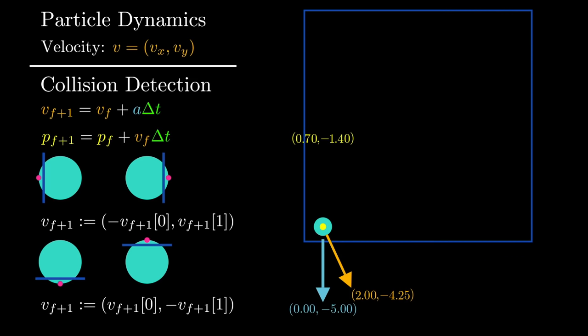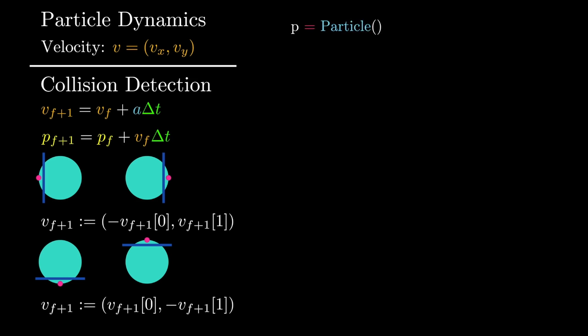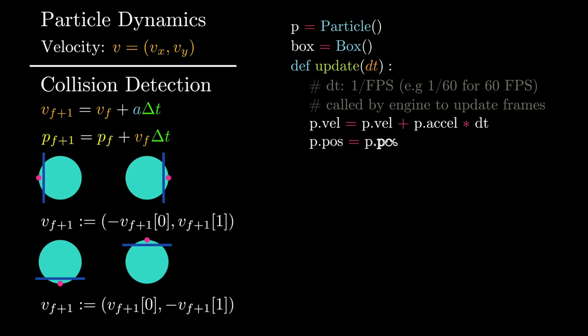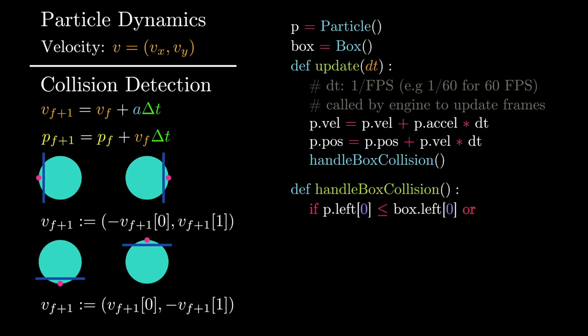Here are a few more frames to show what a collision with the bottom edge looks like. Notice that the updates to velocity and position happen regardless of a collision. Let's put this all together and see what an implementation of this logic looks like. We'll have a particle object containing information about dynamics and a box object representing the enclosed space. In most animation or game engine frameworks, there's a paradigm for updating information frame by frame via an update function, where we are given the time between frames and define how our object's properties change over time. The engine then calls this function from frame to frame.